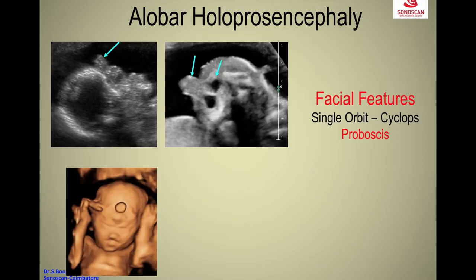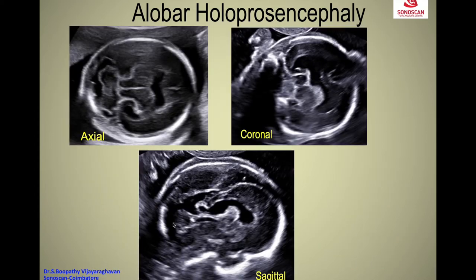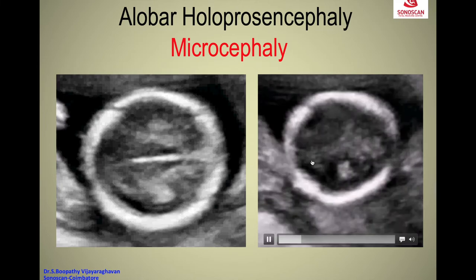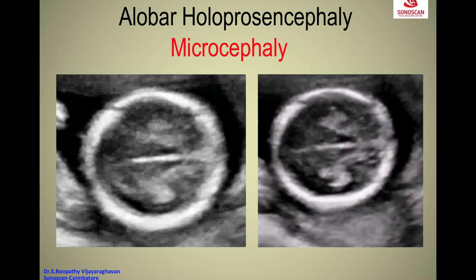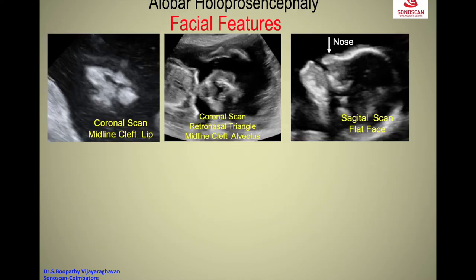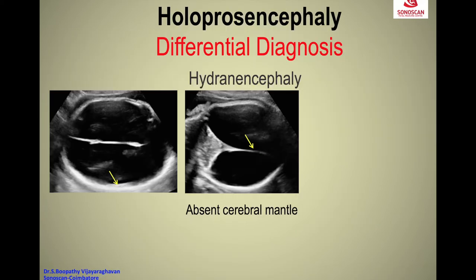If you take a section scan, this is the 3D reconstruction. In the coronal scan of the face you see the mouth, upper lip. Here there is a suggestion of absent CSP but it is not clear. In cephalic presentation, we can see a very flattened, collapsed nose — it may mimic as if there is no nose.